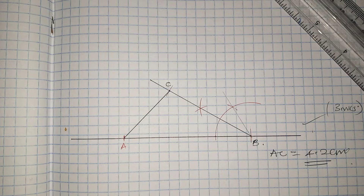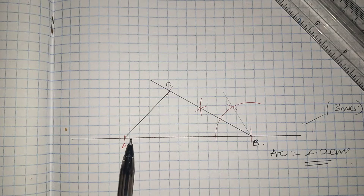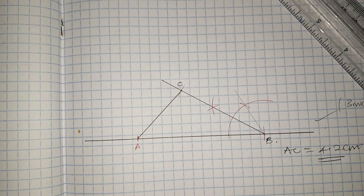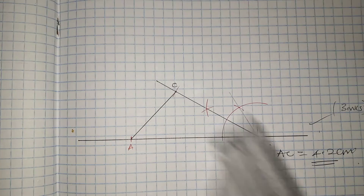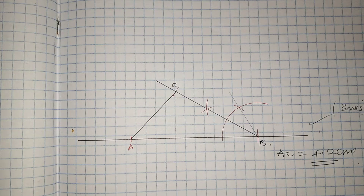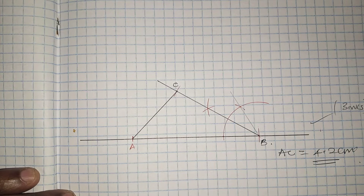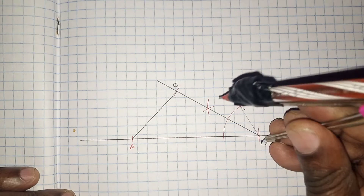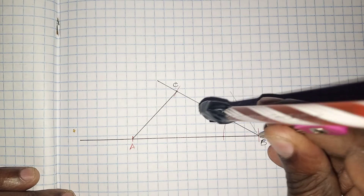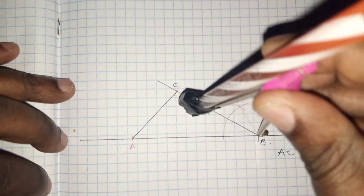Next, draw a circle that touches the vertices A, B, and C. To construct a circle touching all three vertices of a triangle, we must bisect at least two sides. I am going to bisect side AB first.